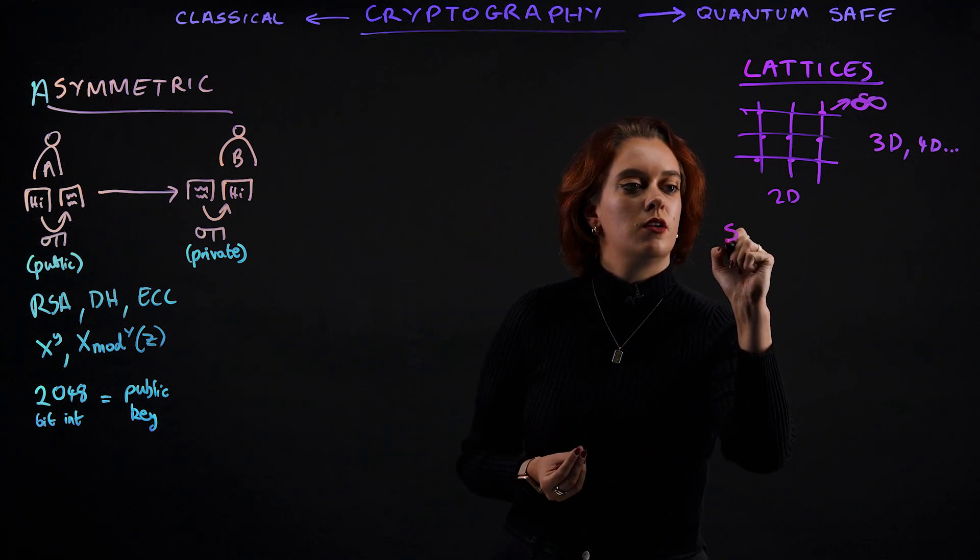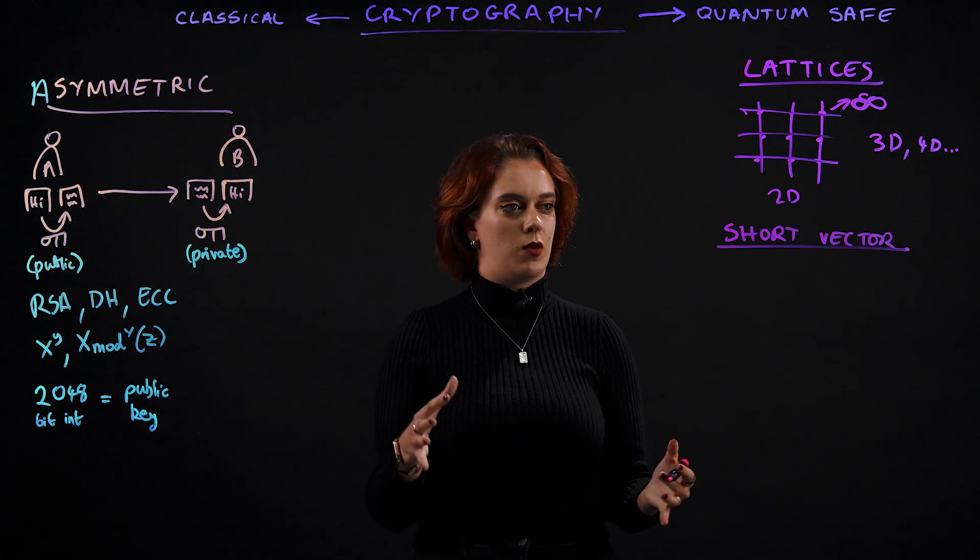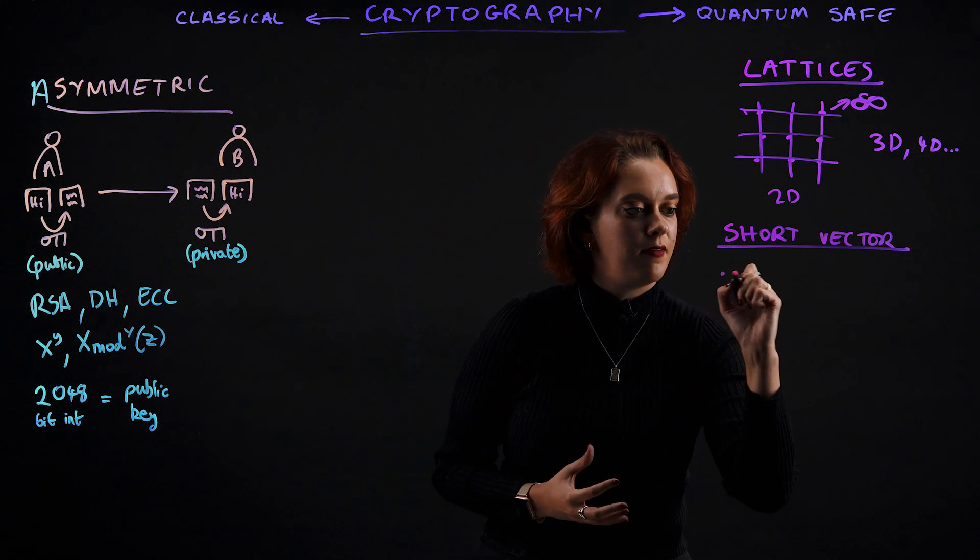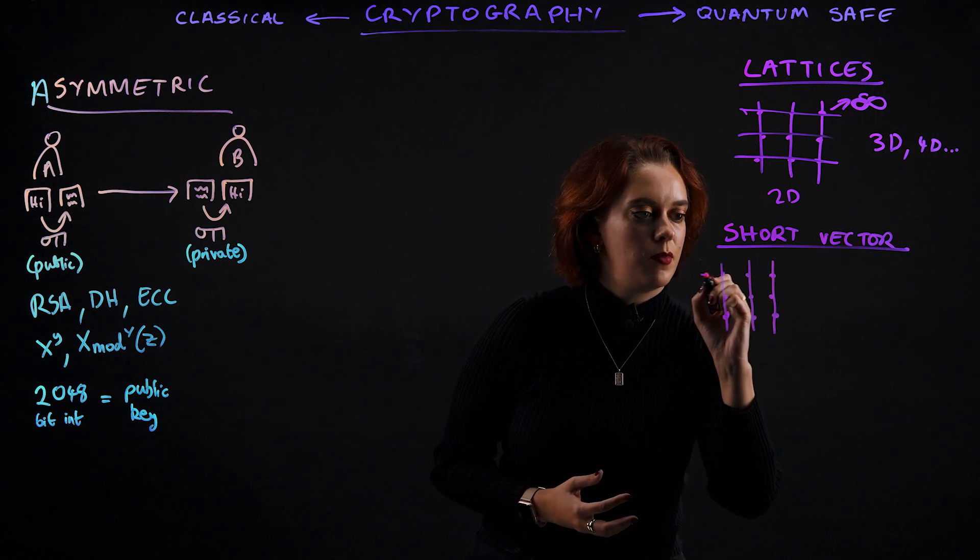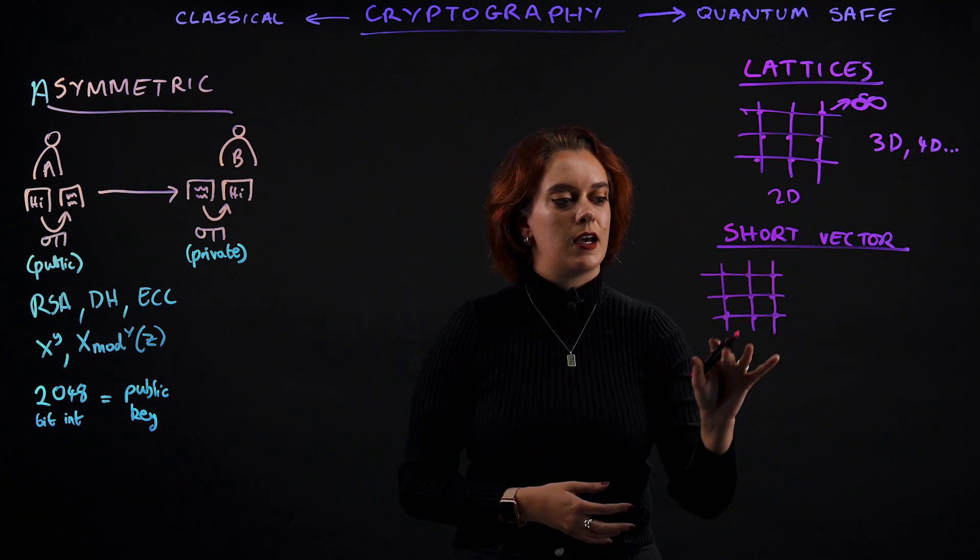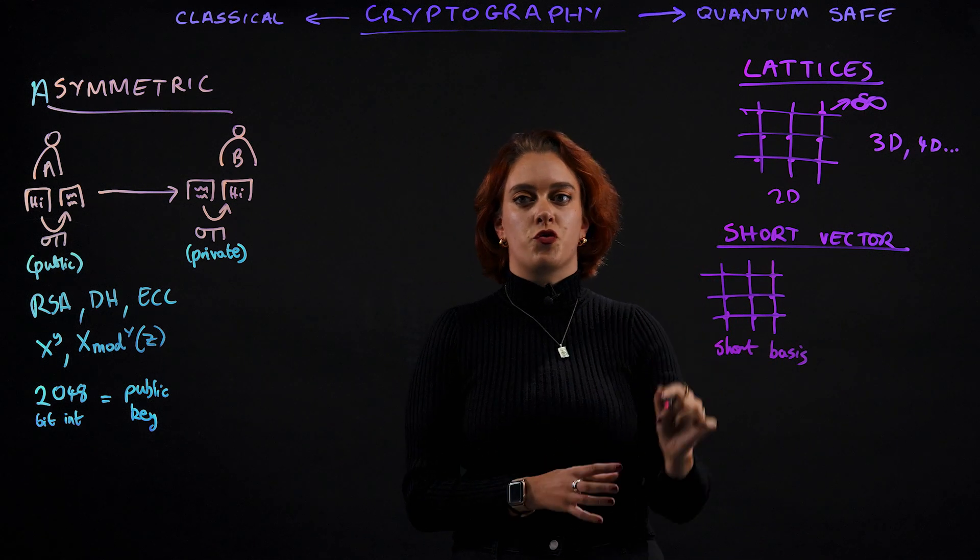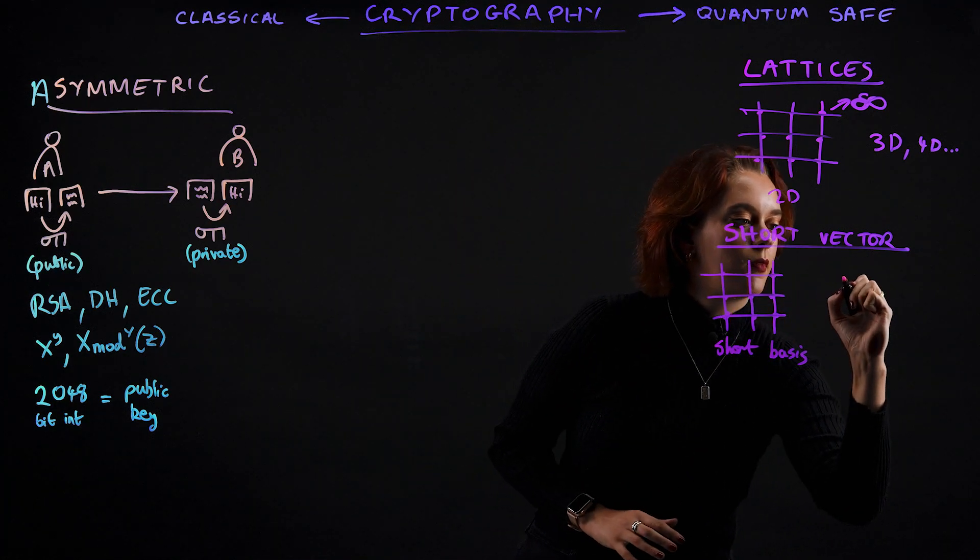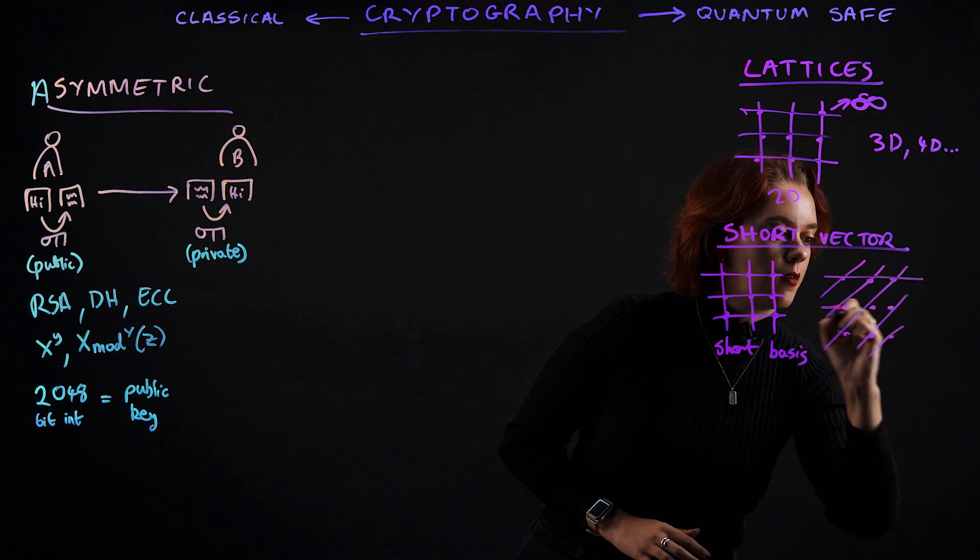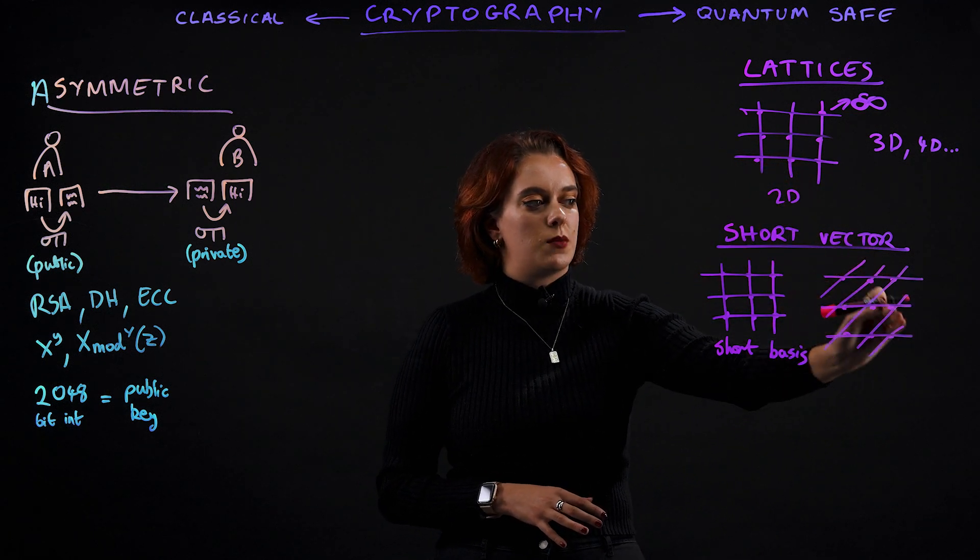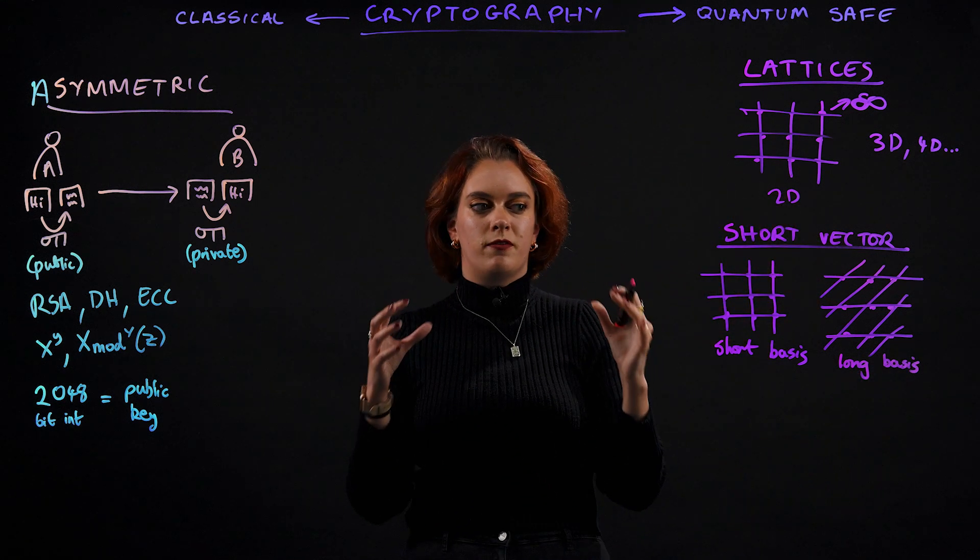And we can use a range of different lattice-based problems to develop quantum-safe cryptographic algorithms. One example is the short vector problem. And the short vector problem essentially works like this. Let's say we have a very small, simple lattice like this, and we can draw some lines in between them that represent the vectors between each of the points. And the way that I've drawn it out here is what is known as a short vector point basis. But I could draw this exact same lattice in a slightly different way, and you can see here how the vectors in between each of the points are much longer. So we would call this a long basis.